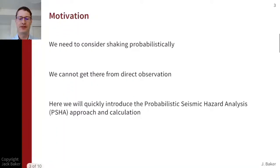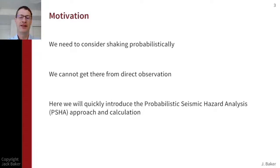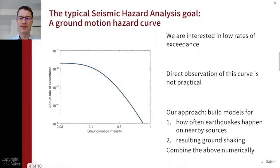The idea with seismic hazard analysis is we're thinking about ground shaking that could occur at a site due to earthquakes. We want to look at it probabilistically. There's no kind of single worst-case ground motion or obvious ground motion we should design for — there's really a probability distribution of what we could observe. We can't estimate that directly from observations, so we're going to use this probabilistic seismic hazard analysis calculation as a slightly more involved calculation that'll help us get to our goals.